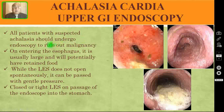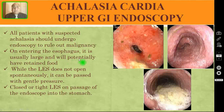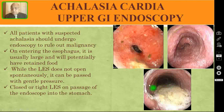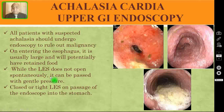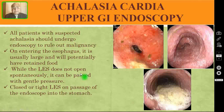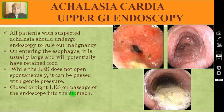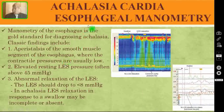Coming to upper GI endoscopy, all patients with suspected achalasia cardia should undergo endoscopy to rule out malignancy. On entering the esophagus it is usually very large and may have retained food. The LES appears contracted and does not open spontaneously, though the endoscope can be passed into the stomach with gentle pressure. You can feel the closed or tight LES on passage of the endoscope into the stomach.